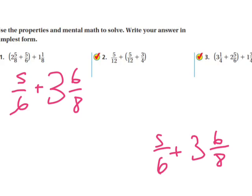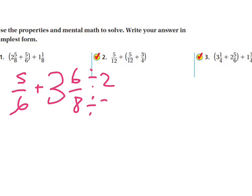Five sixths plus 3 and six eighths. Now, I like to simplify as much as possible, so I can work with small numbers. Six eighths can be simplified by dividing the top and bottom by 2, and I get three fourths. So now I have five sixths plus 3 and three fourths.